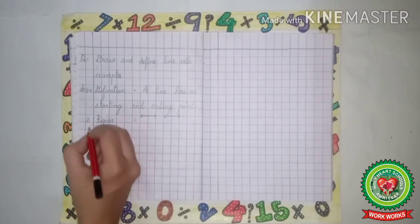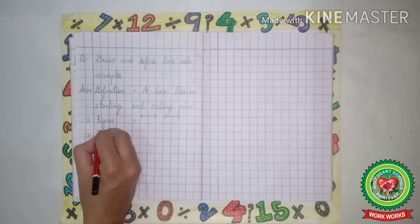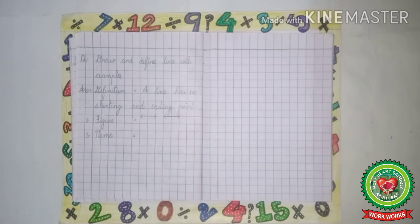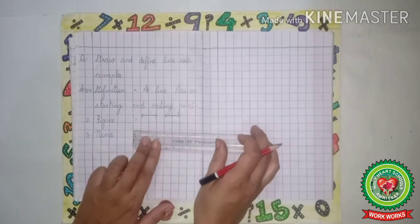Now leave one line, three dot. Name, N-A-M-E name. Now we will again draw a line first.